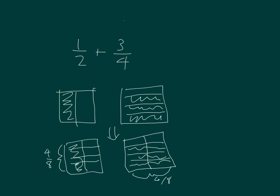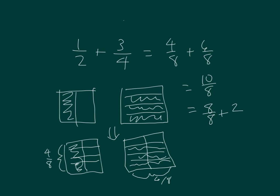So 1 half plus 3 fourths is equal to 4 eighths plus 6 eighths, which equals 10 eighths. And 10 eighths I can rewrite as a mixed number. 10 eighths is equal to 8 eighths plus 2 eighths, so that's equal to 1 and 2 eighths. We can also write this as 1 and 1 fourth, if we divide by 2 in the numerator and denominator.